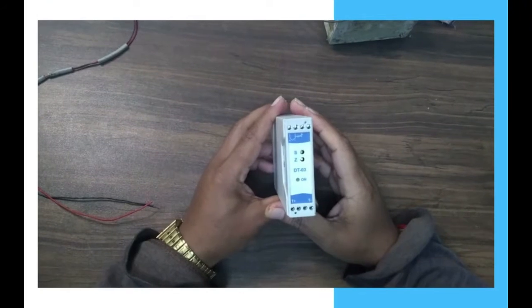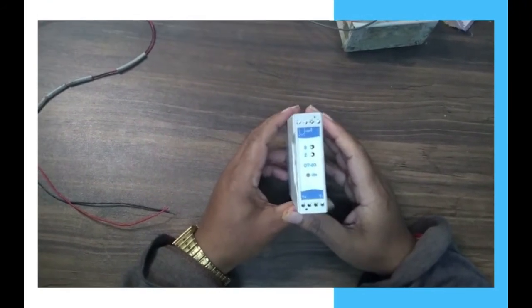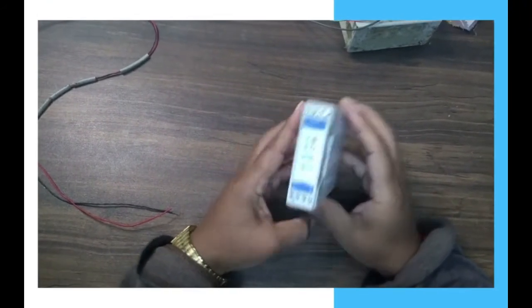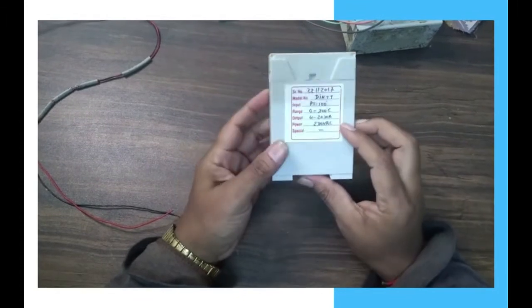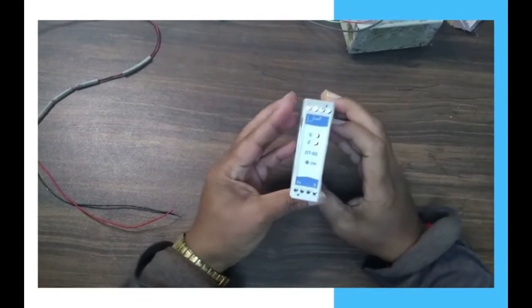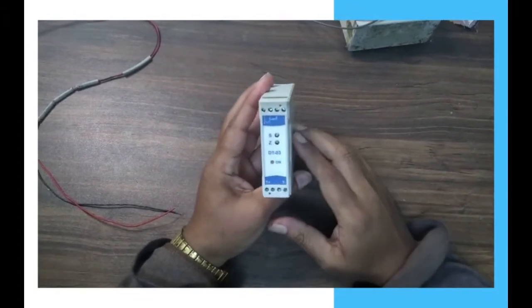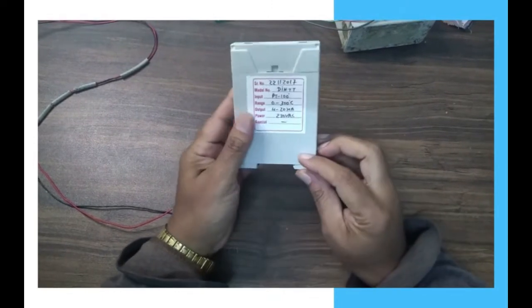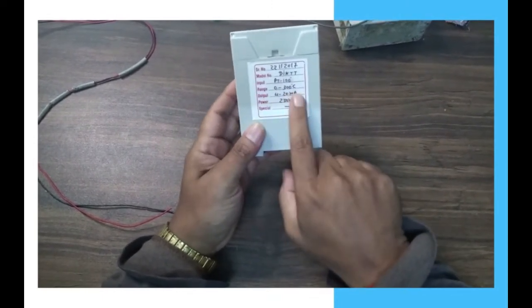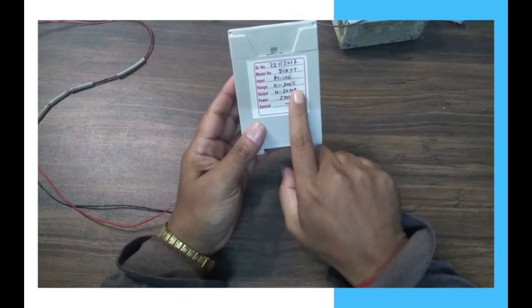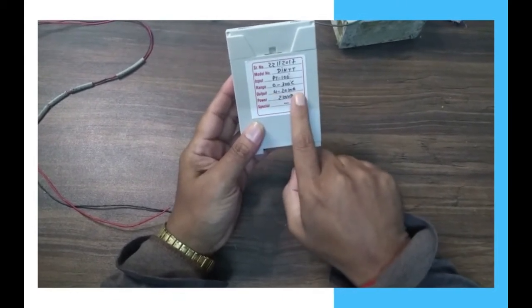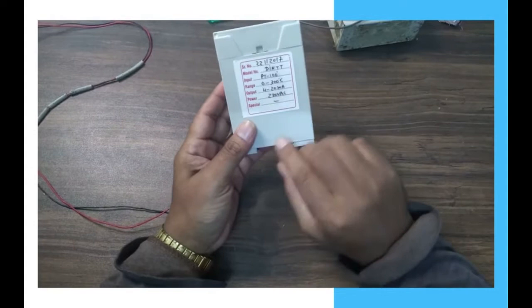Welcome friends. Today we are going to discuss the thin rail mount temperature transmitter. This is how it looks here. Input is RTD 3-wire, temperature range is customized, output is 4 to 20 milliampere, and power supply is 24 VDC.